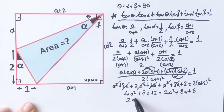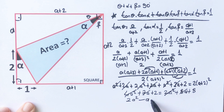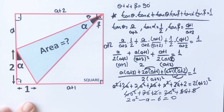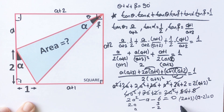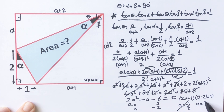Rearranging gives us: two a squared minus a minus six equals zero. If we factor: separating as two a and a, and three and minus two, we get two a plus three times a minus two equals zero. So a equals minus three over two, which can't be negative, therefore a equals two units.